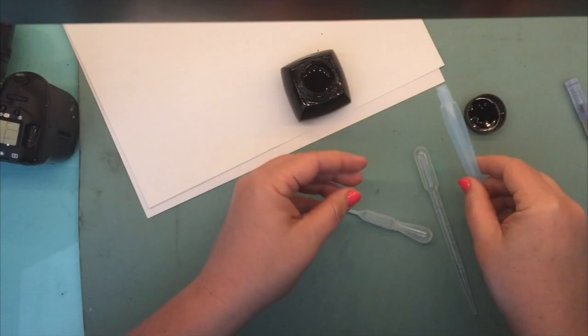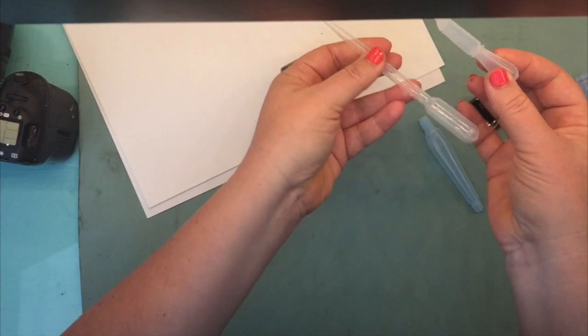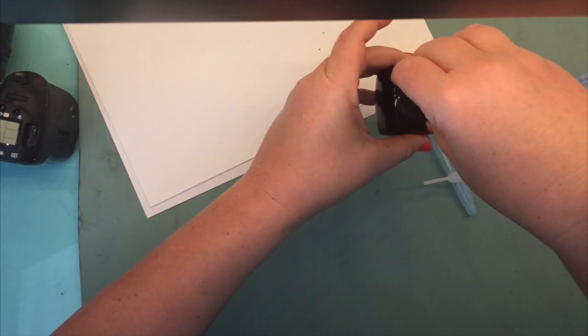So I have an Aquash water brush here, this is a medium Pentel one. I've got a little ink dripper. There are various sizes that you can get. I'm just going to use this little one and I have some of the ink that I want to try.